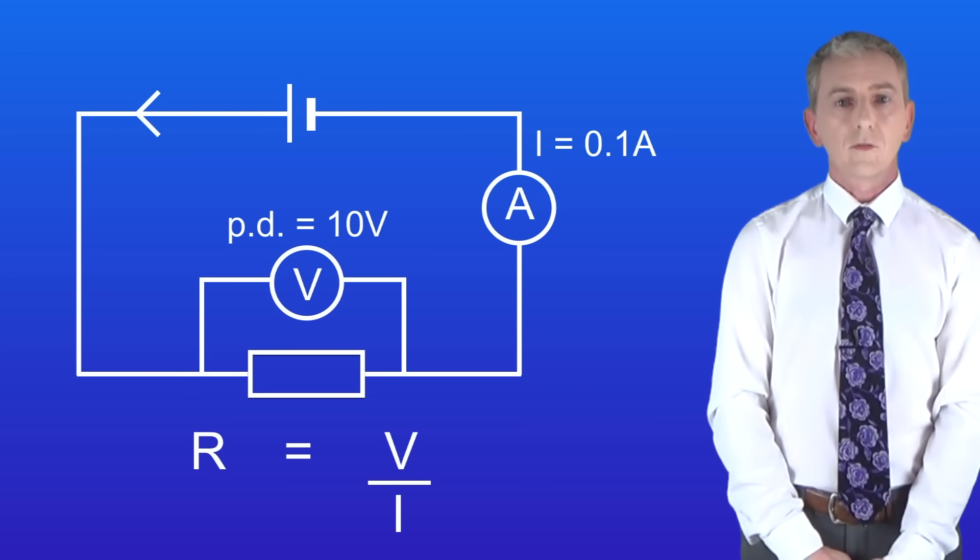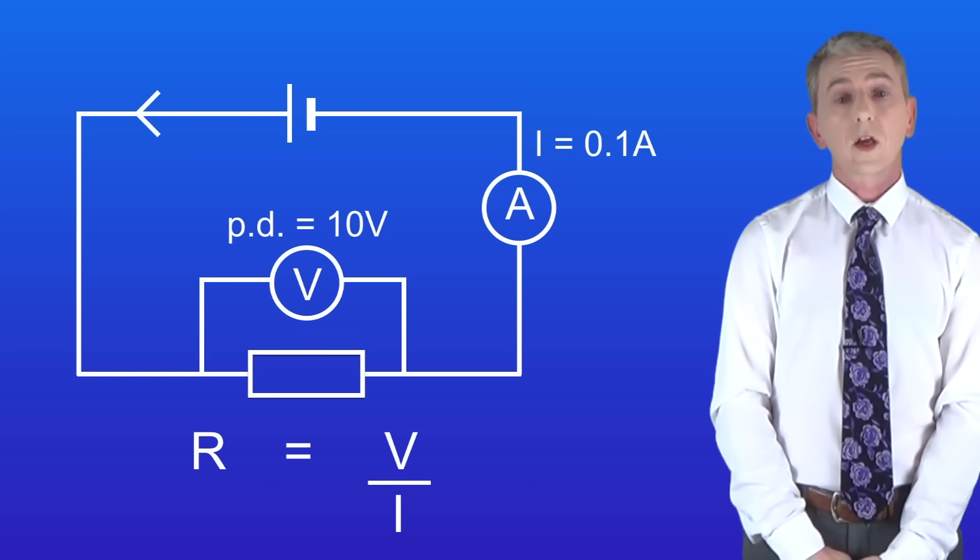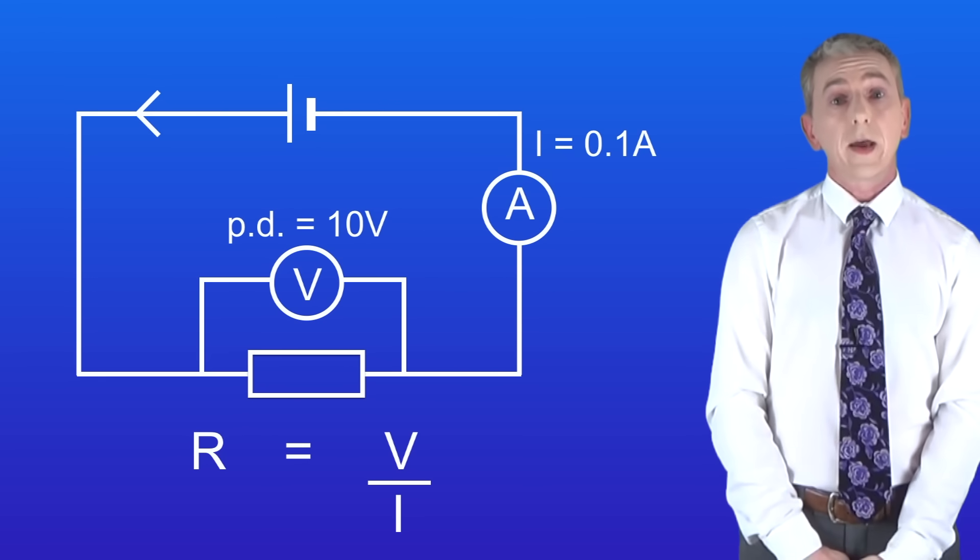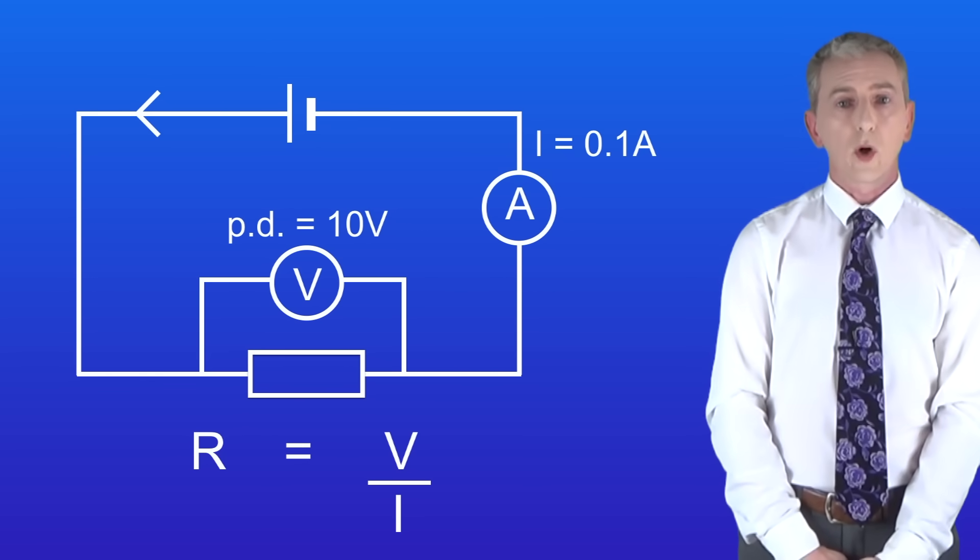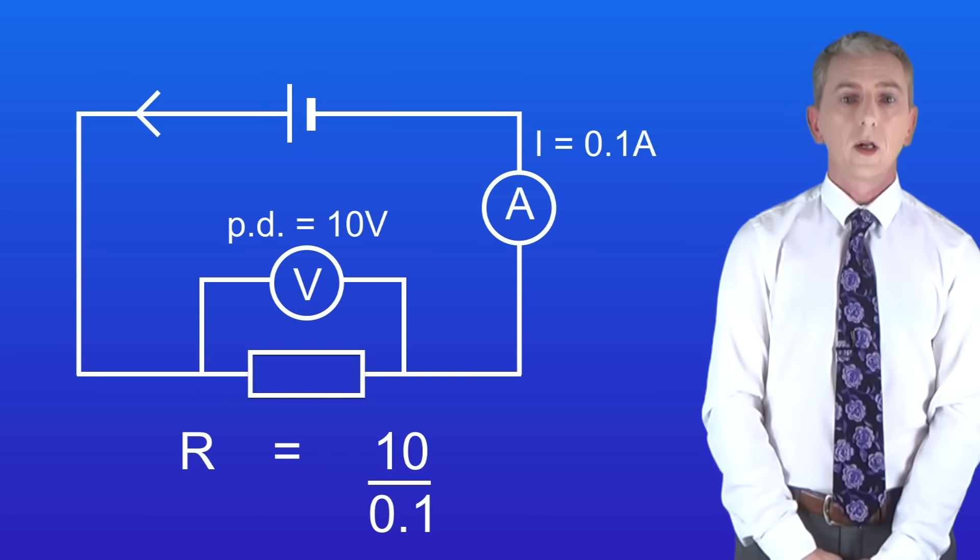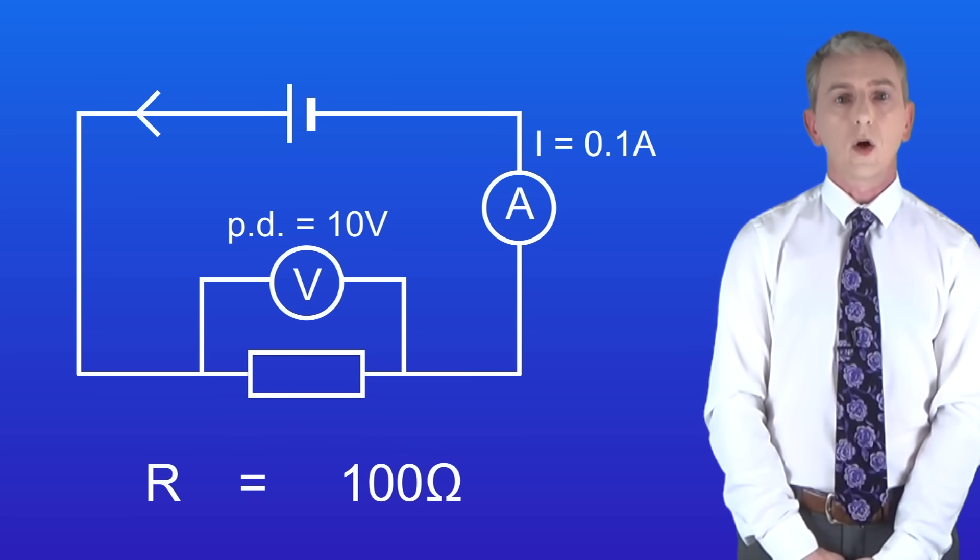We can calculate the resistance of the resistor using the equation R equals V divided by I. V is the potential difference which is 10 volts. I is the current and that's 0.1 amperes. So the resistance is 10 divided by 0.1 which gives us a value of 100 ohms.